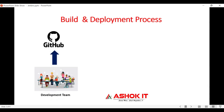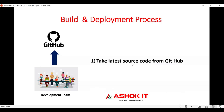All these developers' code will be stored in one place called a source code management tool — such as GitHub or Bitbucket. There are several source code management tools available in the market. We need to take the code from GitHub and deploy it to the server. This is called the build and deployment process, and it is mandatory for every project.